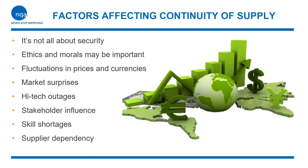A web search for supply chain assurance will return many results with cyber security at the top of the list. Someone new to the discipline could be forgiven for thinking it's all about cyber security of the supply chain. And indeed for many organizations, information is their lifeblood and they exchange information over the internet. Data protection fines and GDPR have put cyber security at the forefront of awareness, but it's not the only factor to be considered and isn't necessarily the most important. A recent survey suggested that cyber attacks were believed to present the lowest risk to organizations.